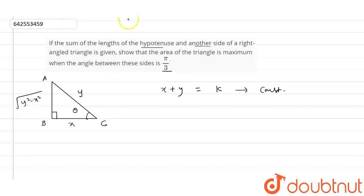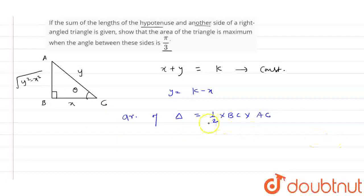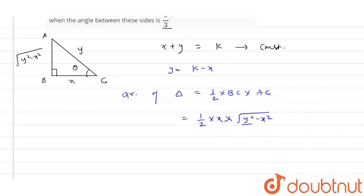Now from here we can say that Y equals K minus X. Now area of triangle is 1/2 BC times AB. BC is equal to X, so 1/2 X, and AC is equal to root Y squared minus X squared. Now if we put the value of Y, we get 1/2 X times root of K minus X squared minus X squared.